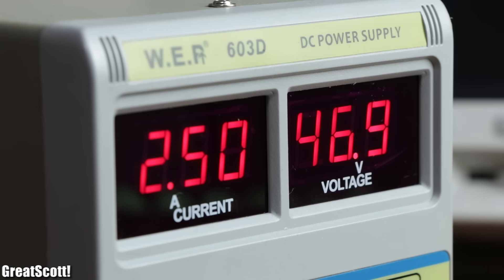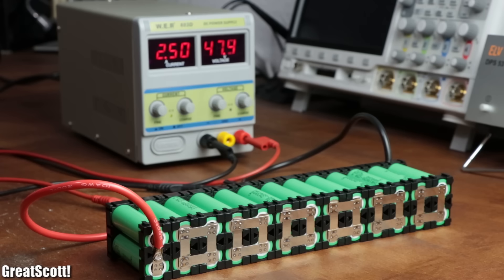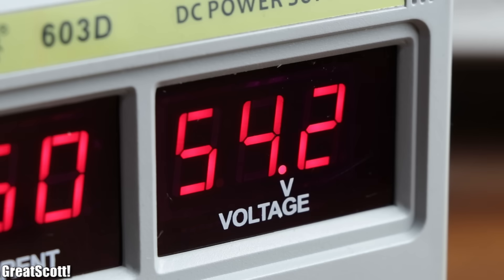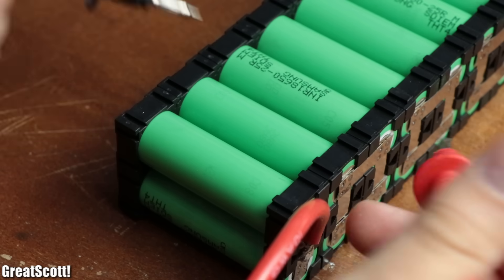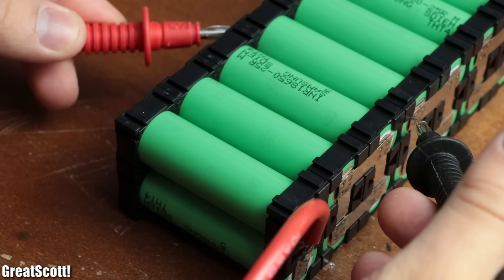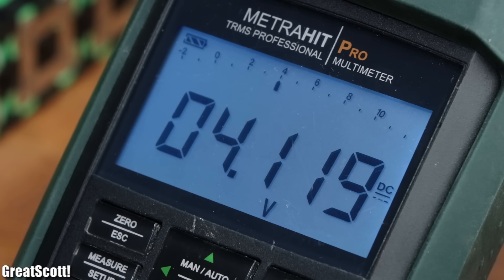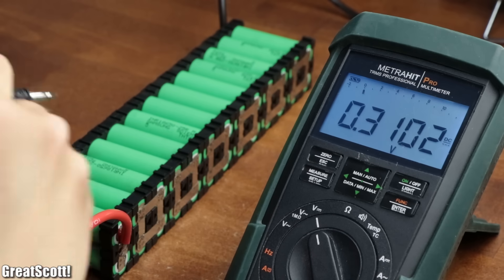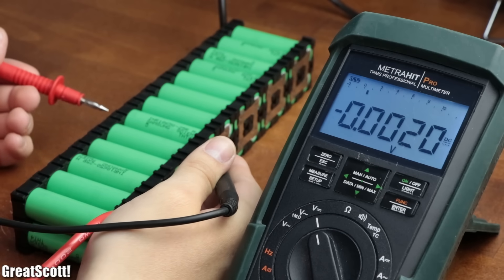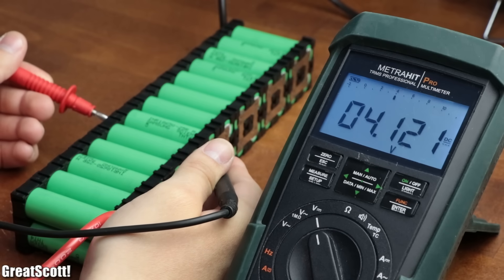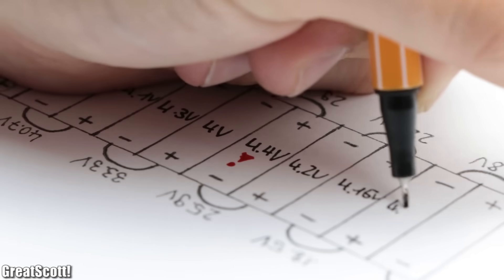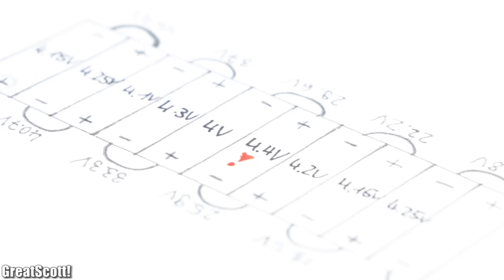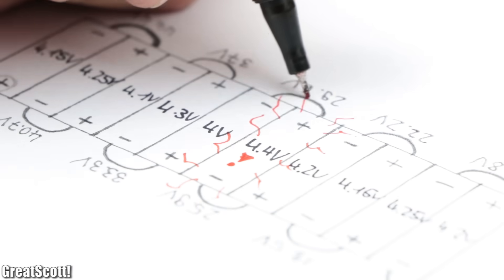And not surprisingly, the charging process worked like a charm. But as soon as I got close to the target voltage, I interrupted the charging process to measure the voltage of each battery pair. And as you can see here, the voltages are still pretty close to one another. But let's imagine we repeat such a charging process several hundreds of times. Since no two batteries are completely the same, the voltage gap between the cell pairs will grow and grow until one will eventually give up.